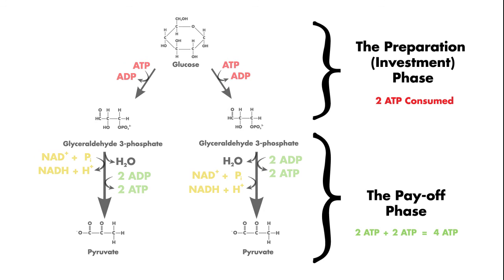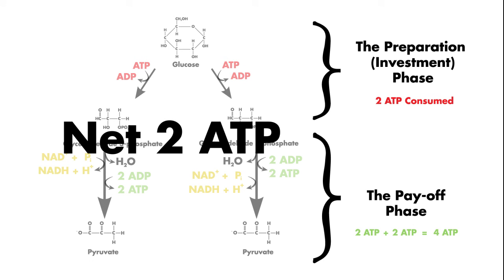Overall, glycolysis actually nets positive energy by a total of two ATP. This is because four ATP are made in the payoff phase, while two are consumed in the preparation phase. And so one molecule of glucose can give you a net total of two ATP molecules from glycolysis alone.